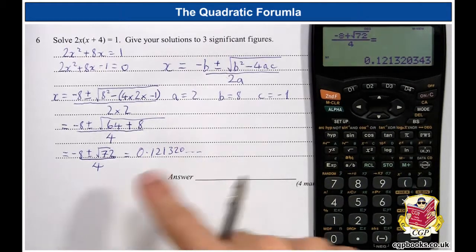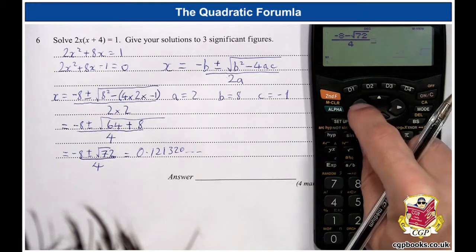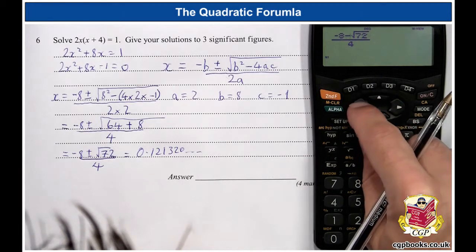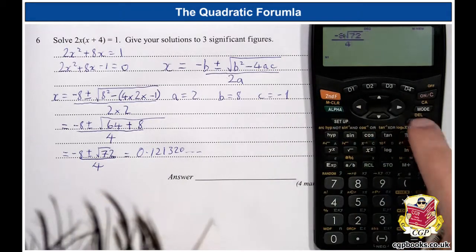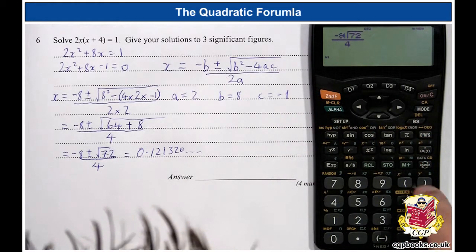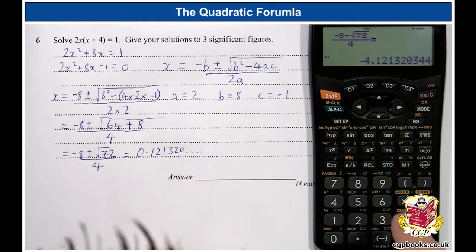And now we'd need to do it when it's minus root 72. So, I can just go and change this. Like this. So, there's a delete button there. So, second function, delete. Minus. Right, change. There we go.